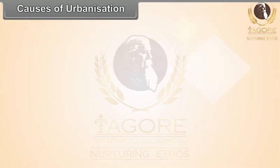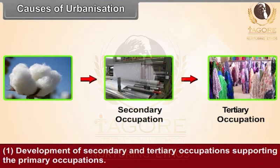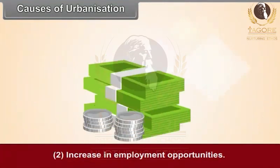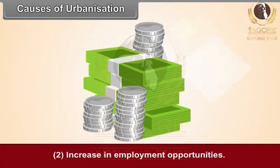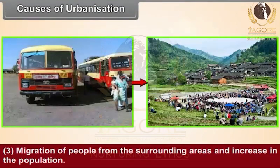Causes of Urbanization: Development of secondary and tertiary occupations supporting the primary occupations; increase in employment opportunities; migration of people from the surrounding areas and increase in the population.